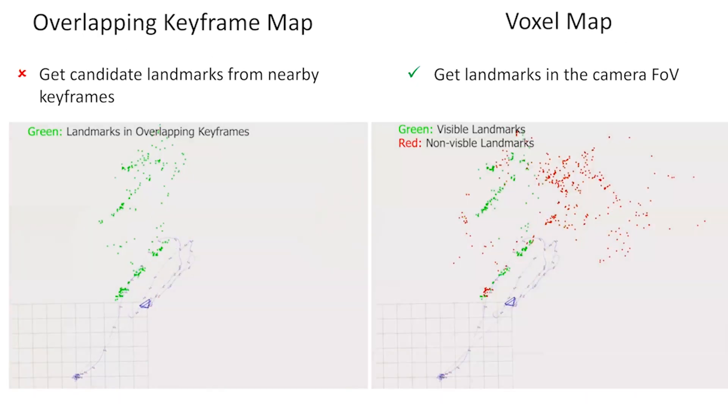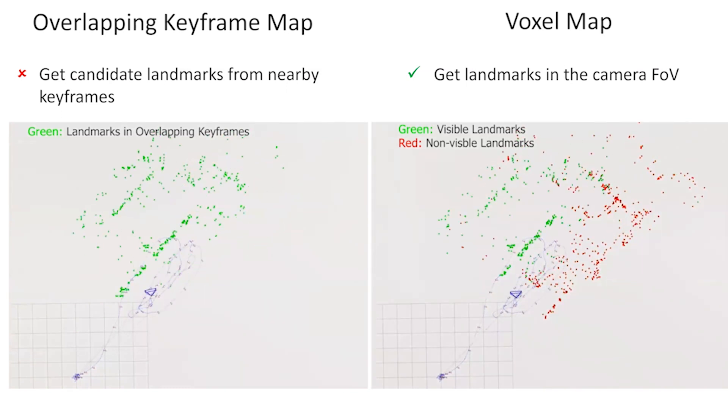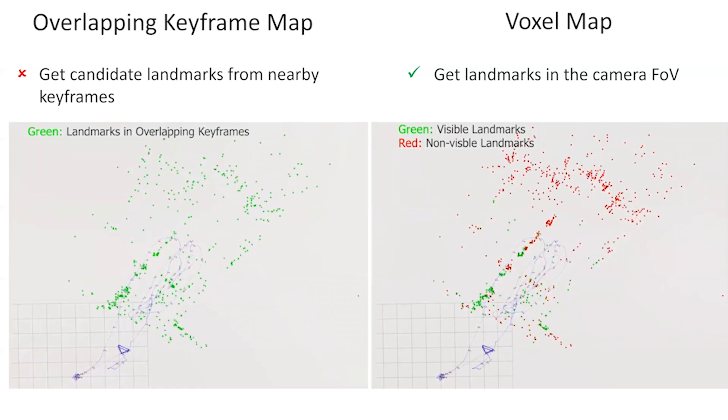We show the qualitative results of map query on machine hall sequence of EuRoC. We can see that the points returned by our method were much more consistent with the field of view of the camera as compared to keyframe map.